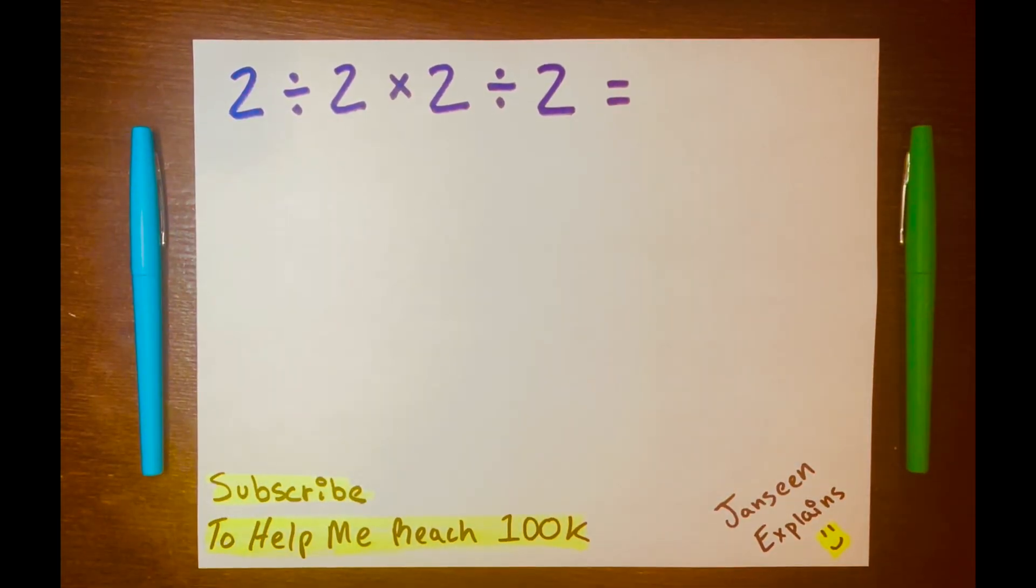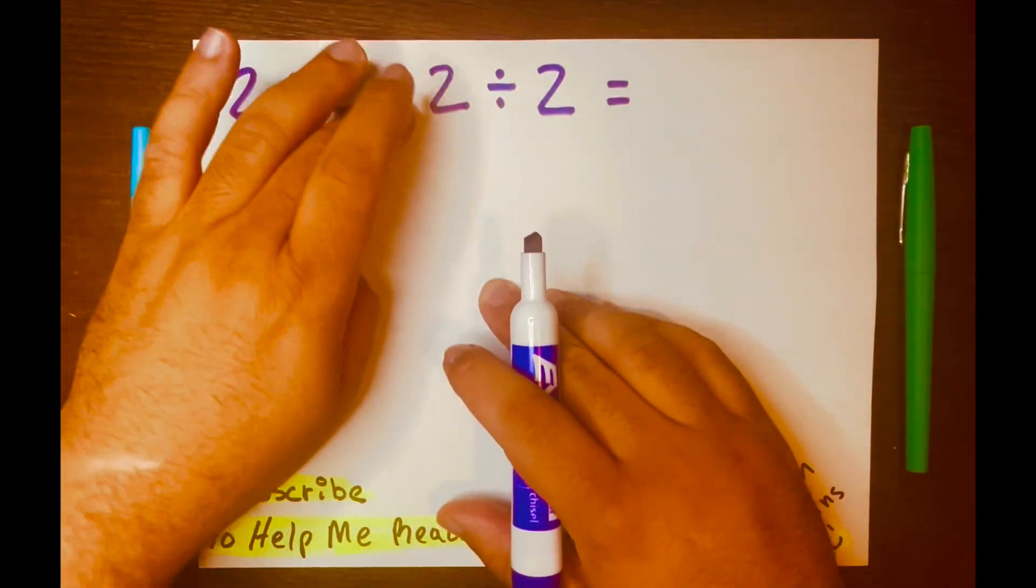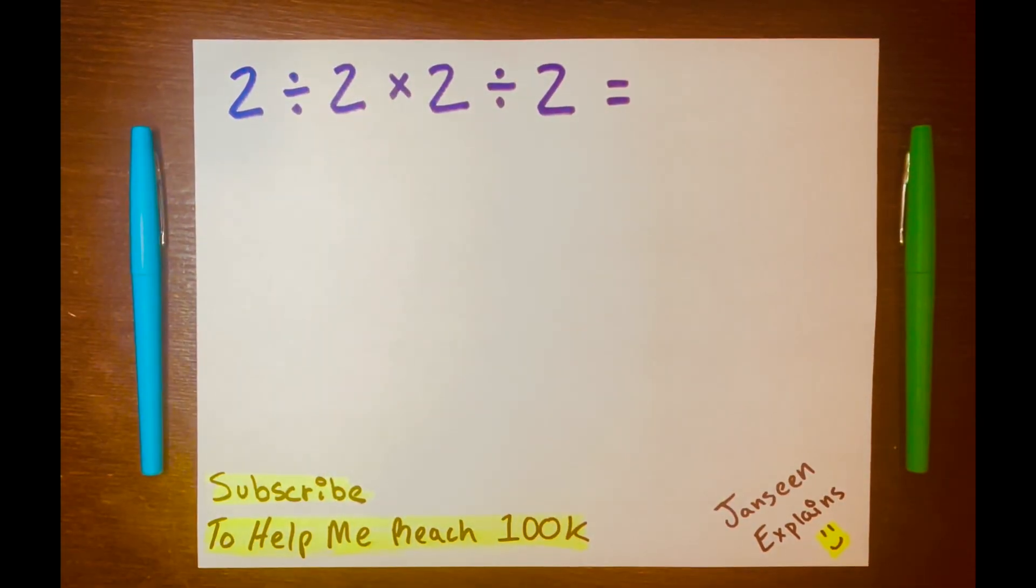Some people, when they see a math problem like this, they'd be like, oh my, how do you solve this math problem? 2 divided by 2 times 2 divided by 2. How do you solve this math problem?